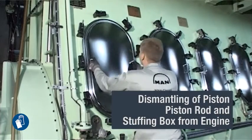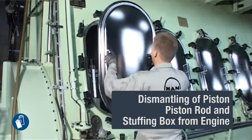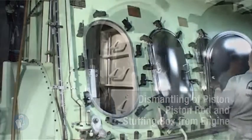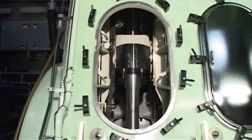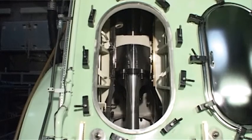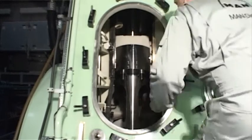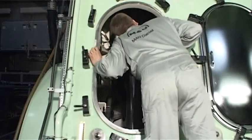Remove the door to the crankcase. Turn the crosshead down far enough to give access to the piston rod stuffing box and the screws for the piston rod.